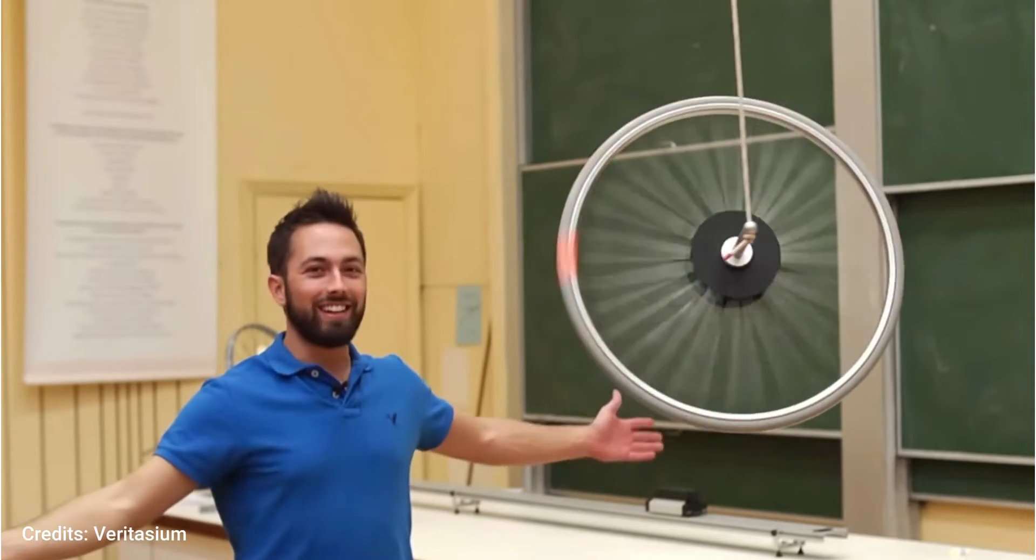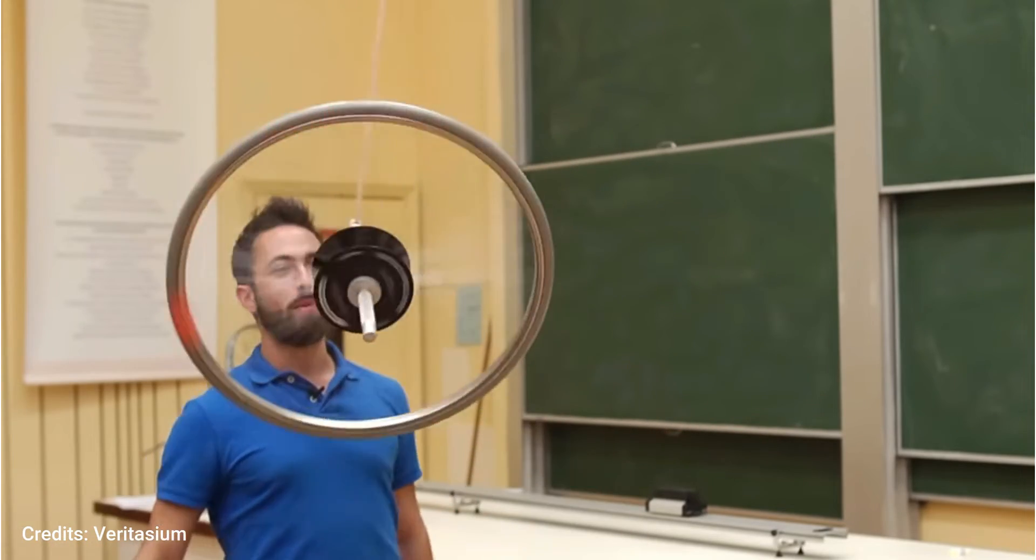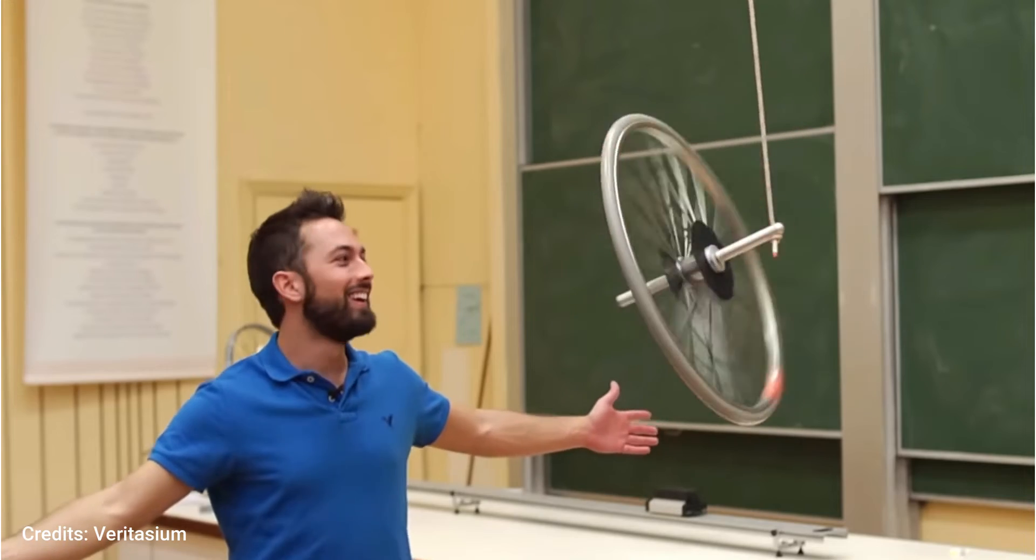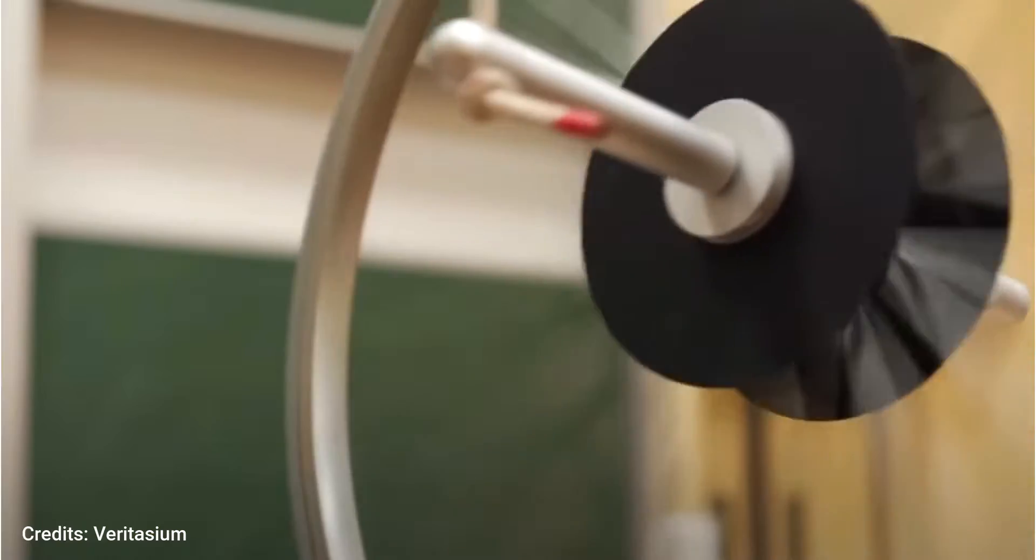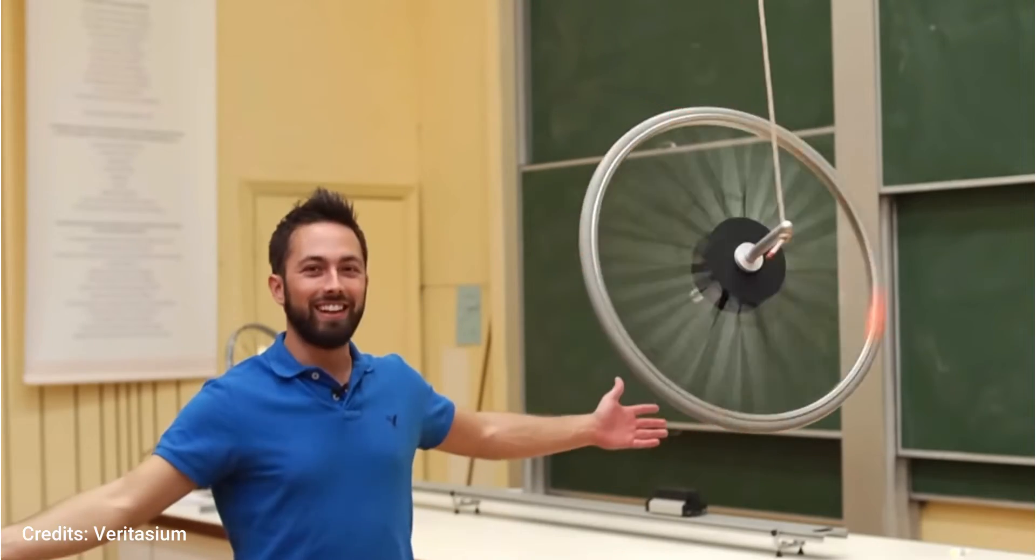A demonstration by Veritasium takes this spinning wheel to the gravity-defying level. Why wouldn't gravity topple the spinning wheel, but instead undergo the precessional motion we see here?